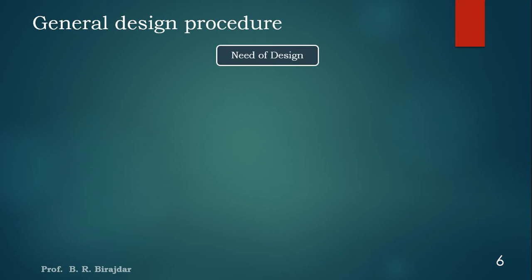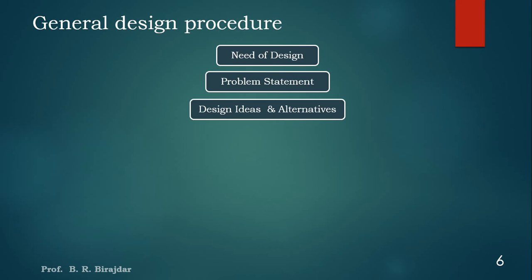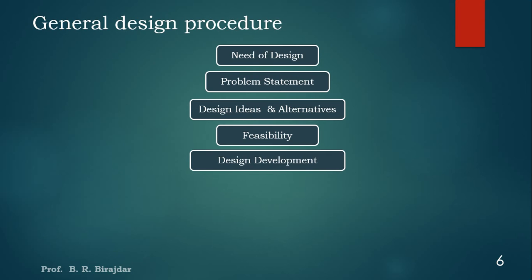Now we will see the general design procedure. It starts with the need for the design — why we should design this. Second is the problem statement: what is the exact problem, specification, or performance level of that design. Third are design ideas and alternatives — here we check the system design and kinematic arrangement of links. Then we check feasibility — the technical and economic aspects — to determine whether the design is feasible. Then comes design development, considering function, production, use, and maintenance.